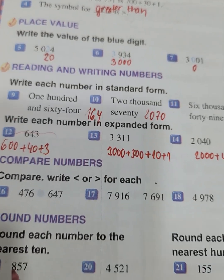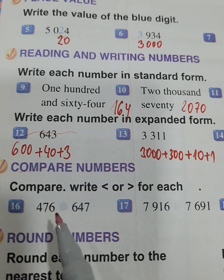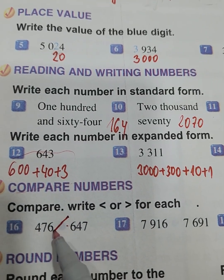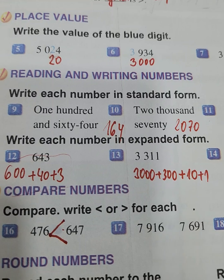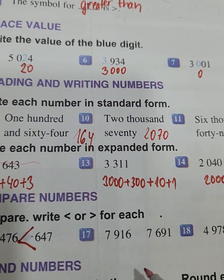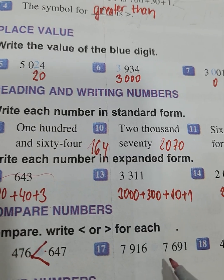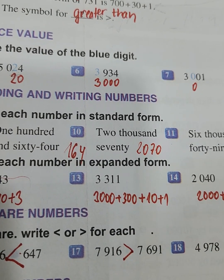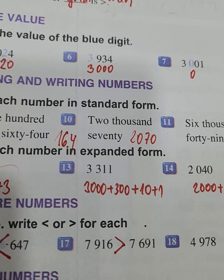We have here 476, and we must write if it's greater or less than. It's less than 647. Now we have 7916 and 7691. So 7916 is greater than 7691.